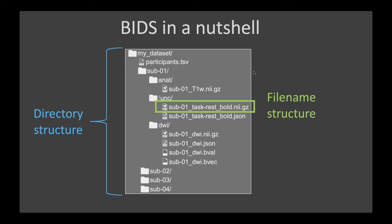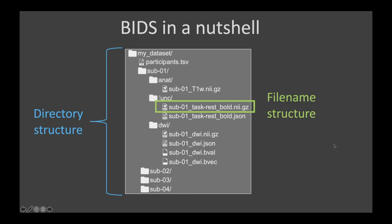The file name already characterizes what is in the file with key-value pairs, very similar to a metadata file — for example, the key 'task' with value 'resting state'. Another principle is that data files are co-located with sidecar files that contain metadata specifications of those data files. We have four files with the same base name but different extensions: three are data files, and the file with the JSON extension is a metadata file describing those three data files.